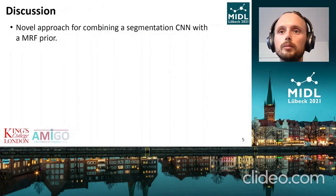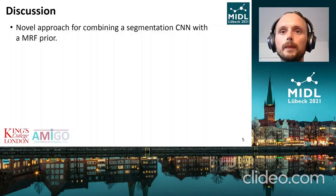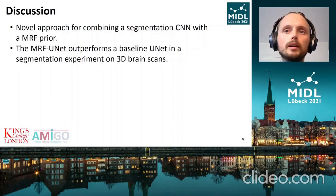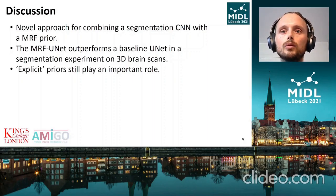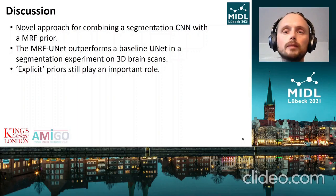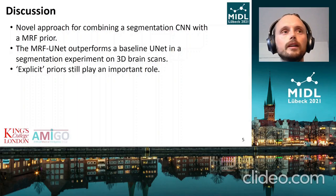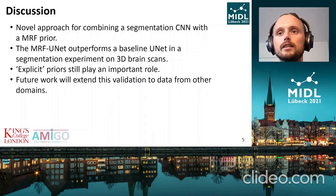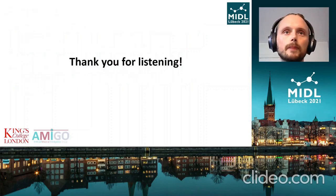To conclude, we have proposed an approach for combining a segmentation CNN with a prior — in this case a Markov random field prior. The MRF U-Net performs favorably compared to a baseline method on a brain MRI segmentation task. Although one could argue that the importance of explicit priors is not that great, seeing that CNNs can learn these implicitly, we still think this is an important application, especially in the limit of small datasets and smaller models. Finally, future work will extend this validation to data from other domains. Thank you for listening.